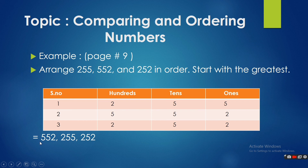So, the order starting with the greatest is: first 552, second 255, and third 252.